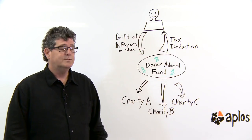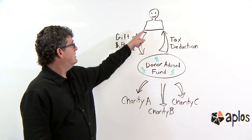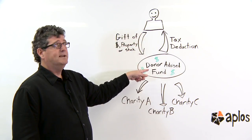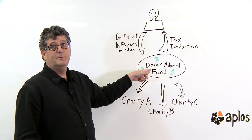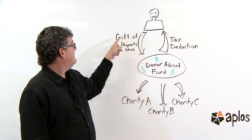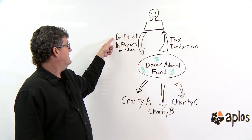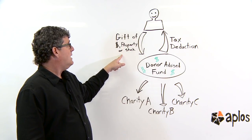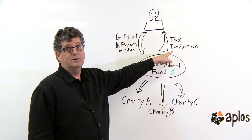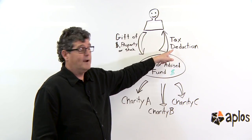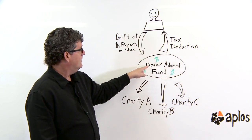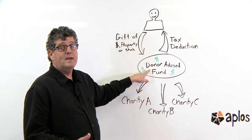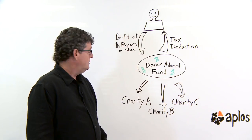Let me show you how it works. It's real simple. So you as the donor, you're going to identify a donor advised fund or a community foundation. You're going to give them a gift of any size — it could be cash, it could be property or stock. You'll get an immediate tax deduction, which is really great. They'll then invest the money, and you'll have a fund under your name, and then you can choose where to give it.